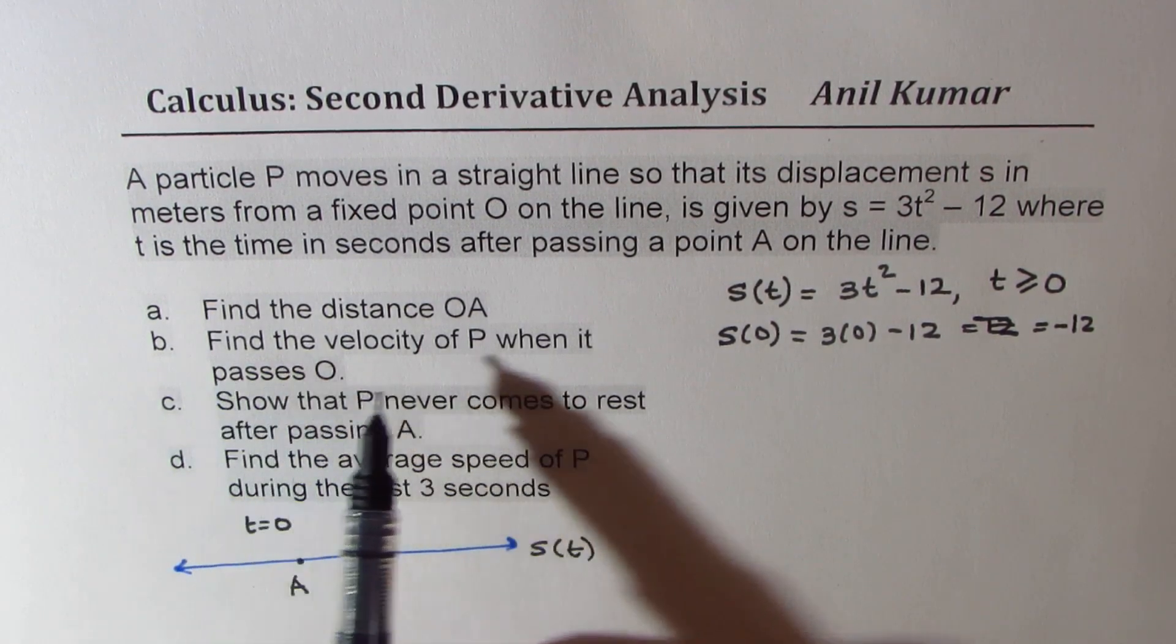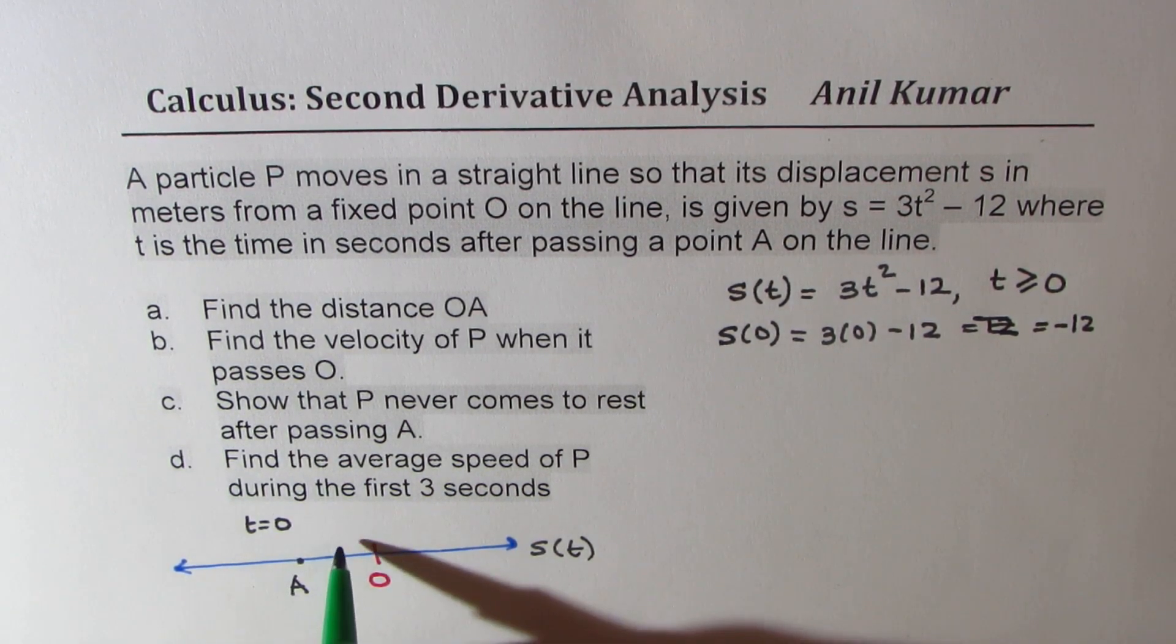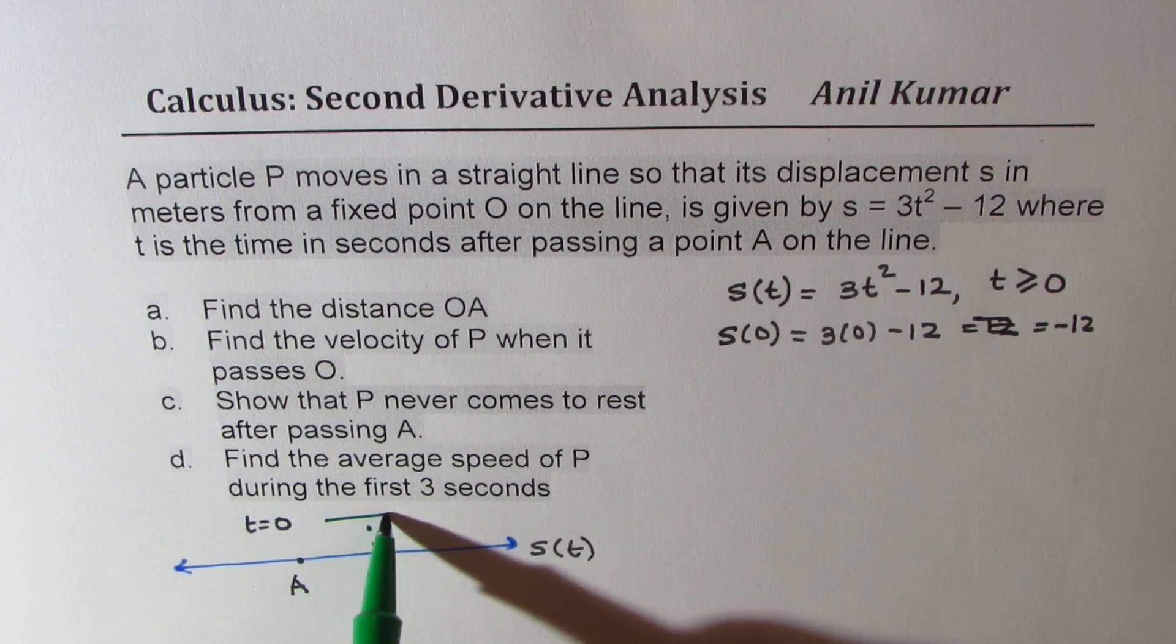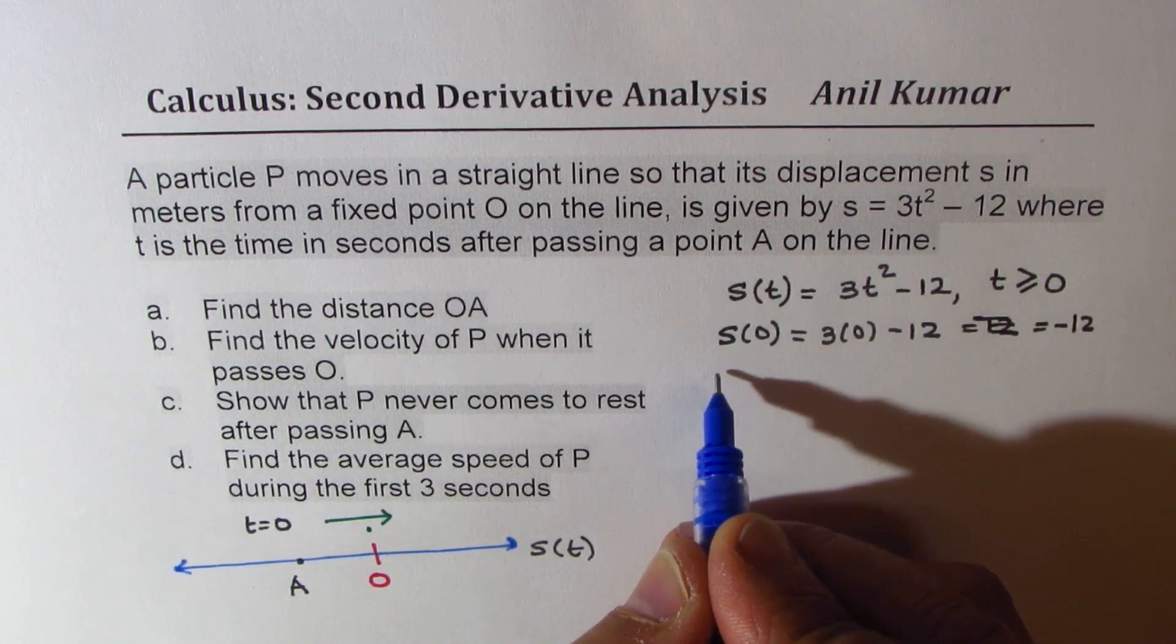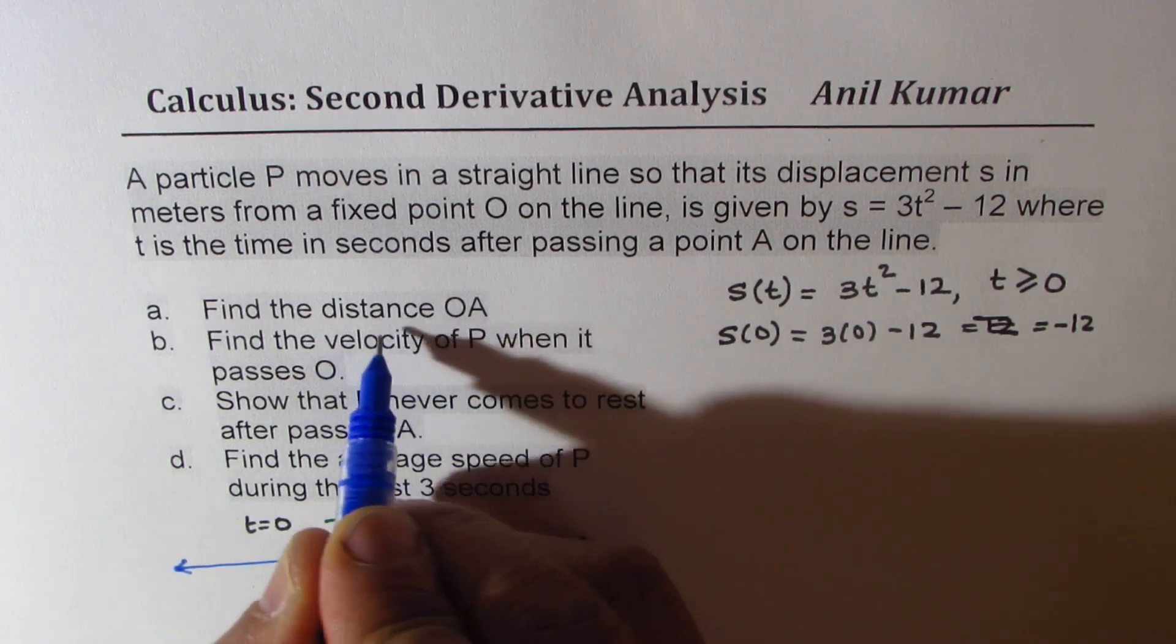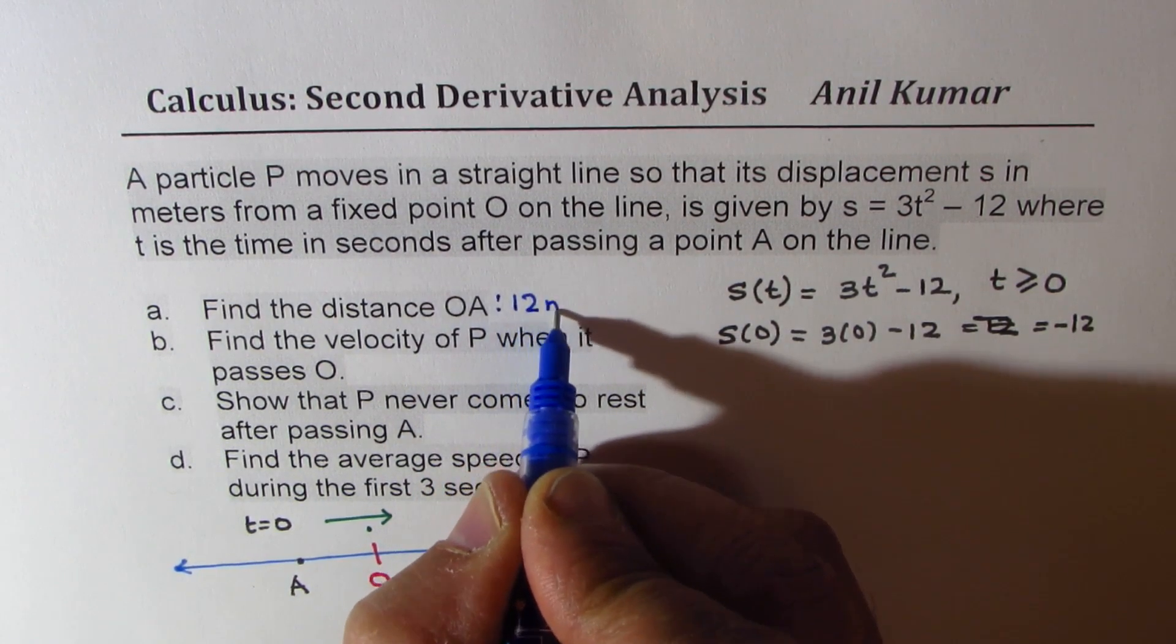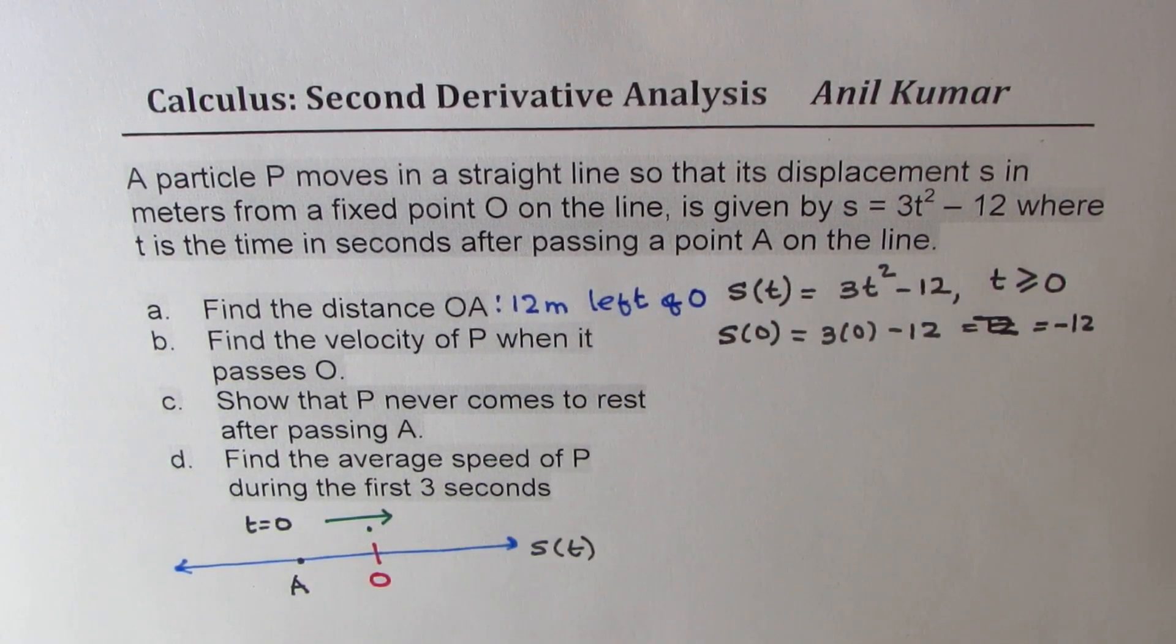Part B is find the velocity of P when it passes O. So now we have to see what is the velocity when the particle is here. So that means from A, it must be moving in this direction, which is considered to be the positive direction. How do we figure this out? Now, since we are interested in velocity, we need to take the derivative. So for part one, let me write down. It is 12 meters to the left. We are saying distance, right? Distance is always positive quantity. So we'll say 12 meters left of O. Distance is 12 meters. So we don't write negative here since it is a distance.